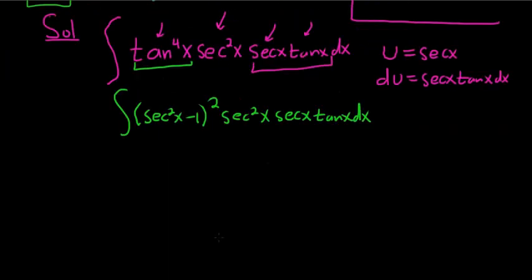So we said u was secant x. This is going to be parentheses u squared minus 1 squared u squared, right, because u is secant. And then all of this is just our du.